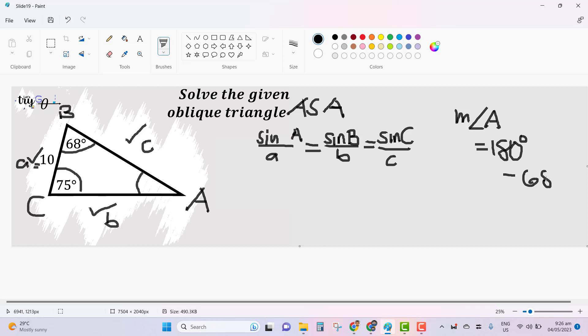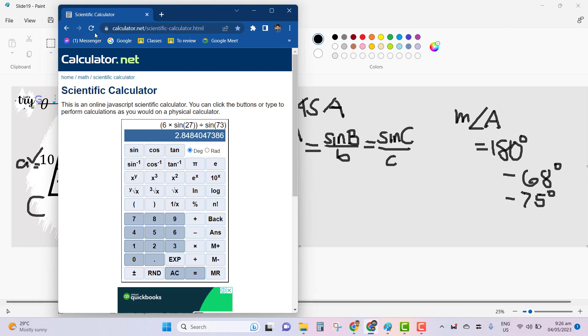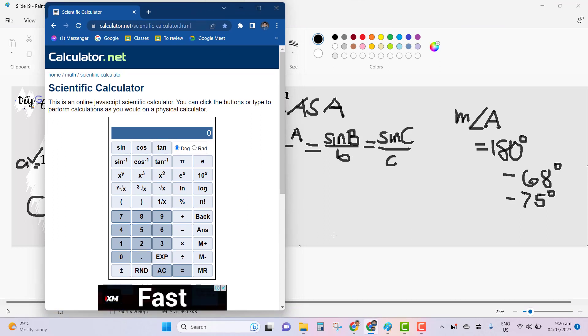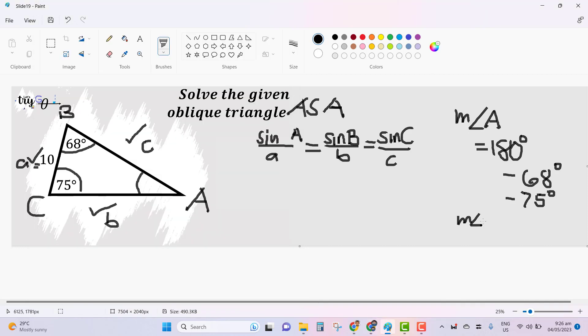So that's less 68 degrees, less 75 degrees. So let's subtract this using this scientific calculator here. We just simply have 180, less 68, less 75, and the result is exactly 37 degrees. It's exact because the two given angle measurements are also exact. So we are going to use here the measurement of angle A exactly equal to 37 degrees.